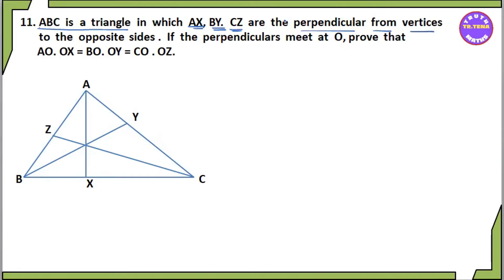The perpendiculars from the vertices are perpendicular to the opposite sides. BY is the perpendicular from B. If CZ and AX are the other perpendiculars, and if the perpendicular lines meet at O, then we need to prove the relationships.